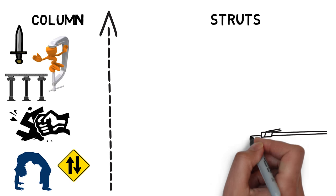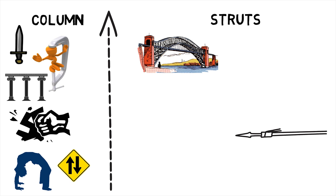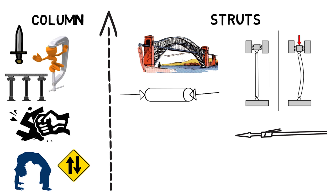Struts, on the other hand, are long slender structural members in an assembly which are subjected only to axial compressive forces. They fail by buckling sometime before the yield stress in compression is reached.